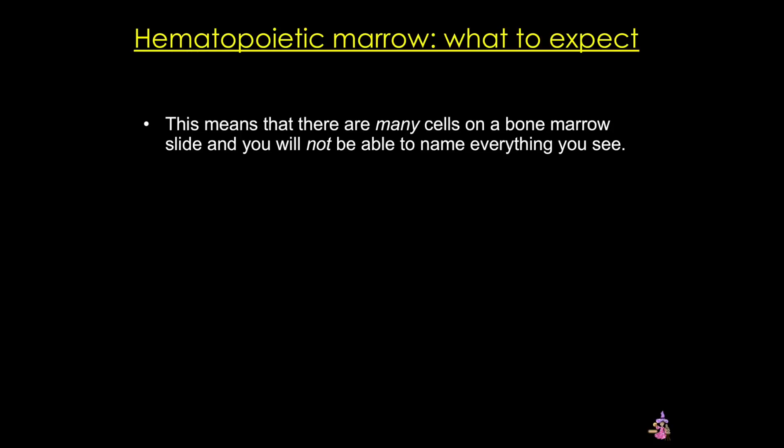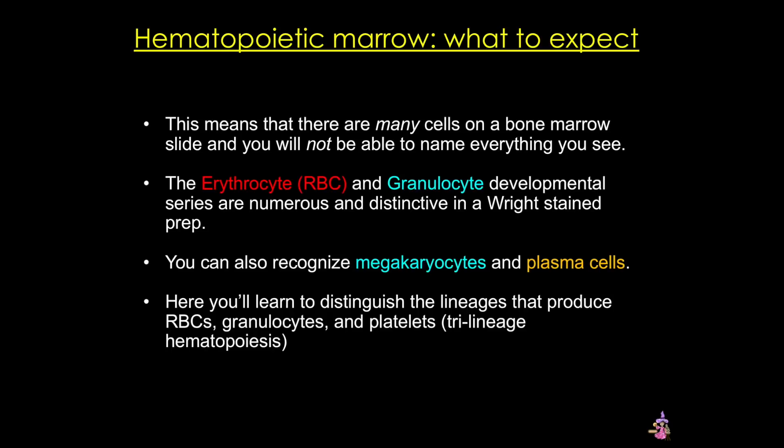Practically speaking, what does 'it's complicated and it's on a continuum' actually mean when you look at bone marrow under the microscope? For one thing it means forget about trying to identify all the cells on a bone marrow slide — you won't be able to name everything you see. What you will be able to do is identify the stages of the erythrocyte and granulocyte lineages, as well as megakaryocytes and plasma cells.